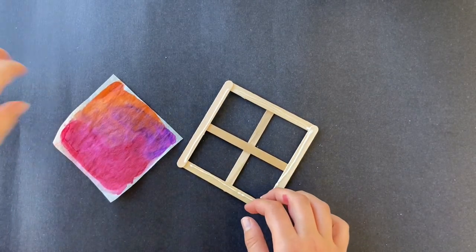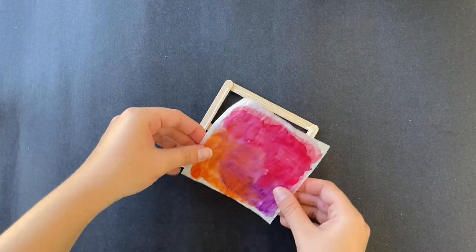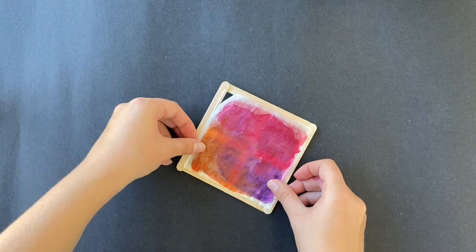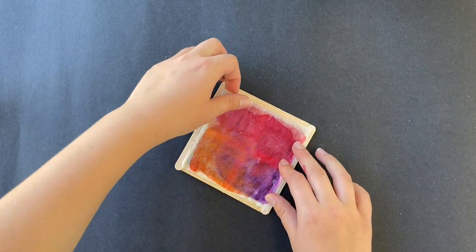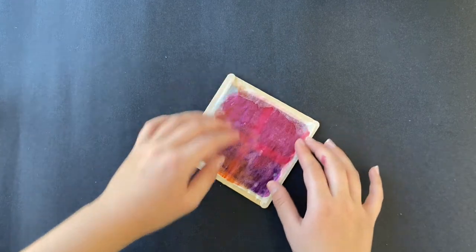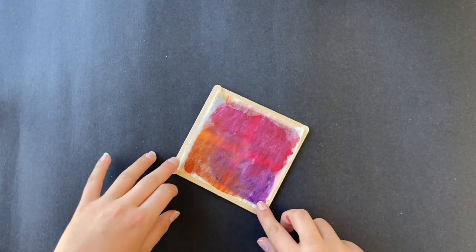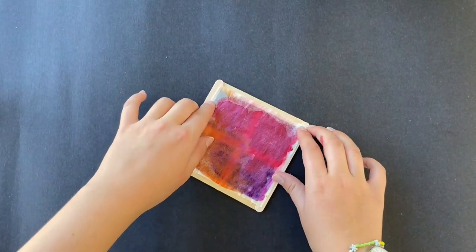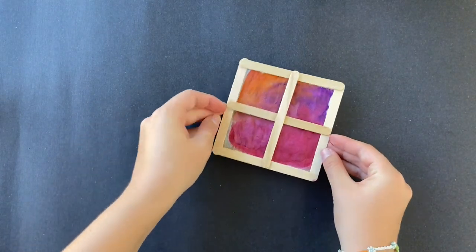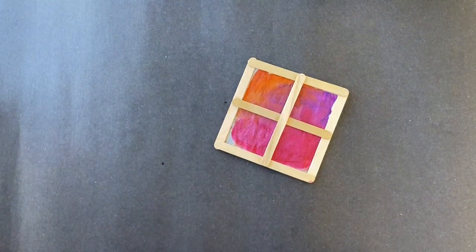You're going to carefully place your glass onto that, making sure you get all of the edges stuck to the popsicle sticks. Press firmly all around the sides. Once you turn it over, you'll have your stained glass window.